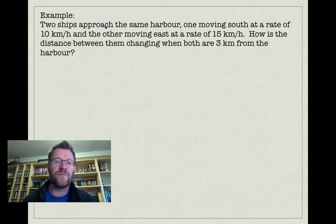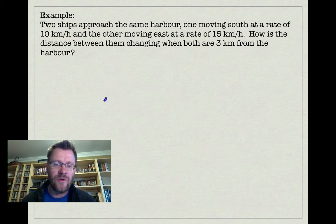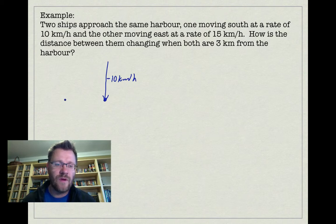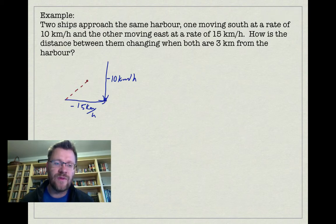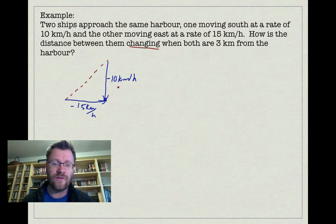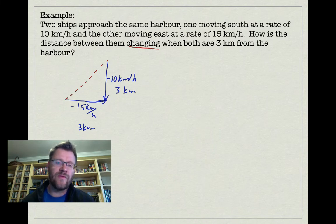Here's our first example: two ships approach the same harbor, one moving south at 10 km/h and the other moving east at 15 km/h. How is the distance between them changing when both are 3 kilometers from the harbor? Since both distances are decreasing toward the harbor, we assign negative velocities: negative 10 km/h for the southbound ship and negative 15 km/h for the eastbound ship. The distance between the two ships is the hypotenuse of the right triangle formed, and both legs are 3 kilometers.